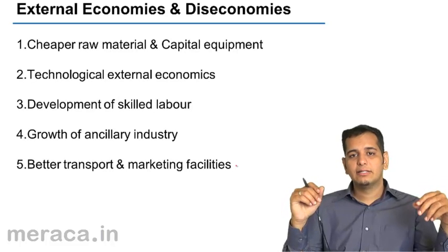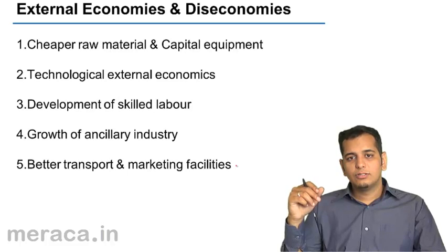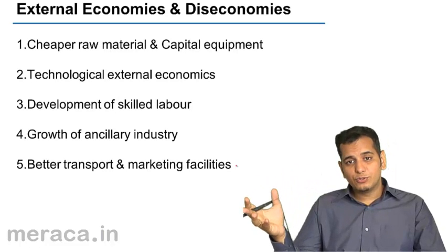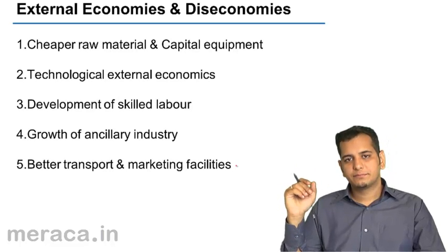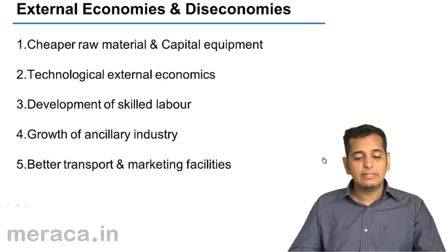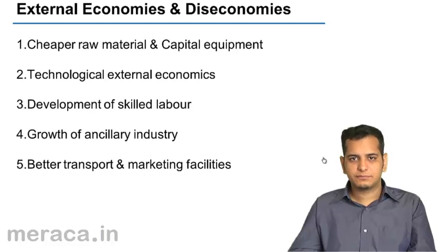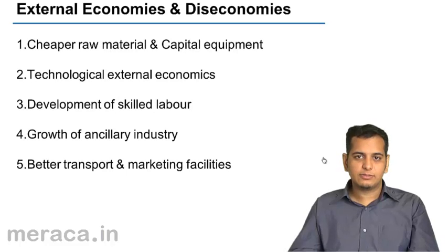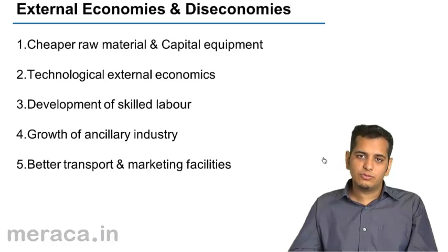The same is the case with marketing. If there are better marketing firms in the market, you will tend to derive economies from them. Since they are able to sell more, you will be able to produce more at a lower rate. These are economies which a firm derives from external factors — not from its internal factors, but from factors which are not within the control of the firm. Therefore, these are called external economies of scale.